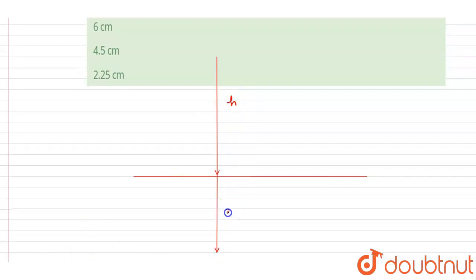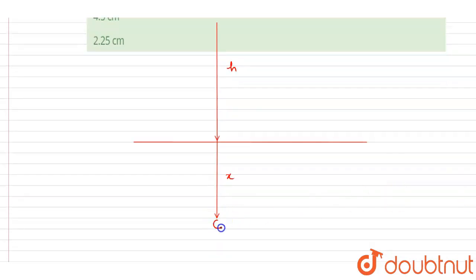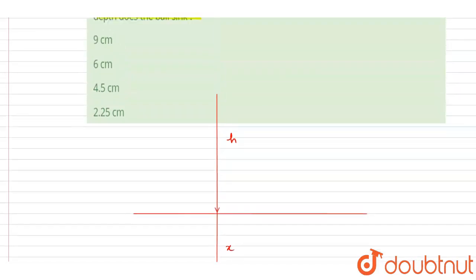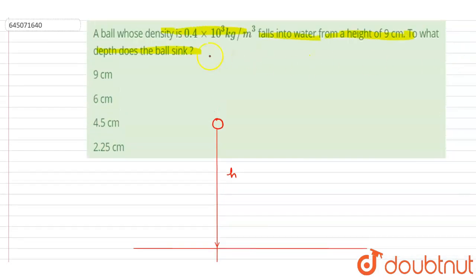and this is x. After traveling to x distance, the ball stops. It started from here and it goes into the water up to a depth of x and then it stops. We want this